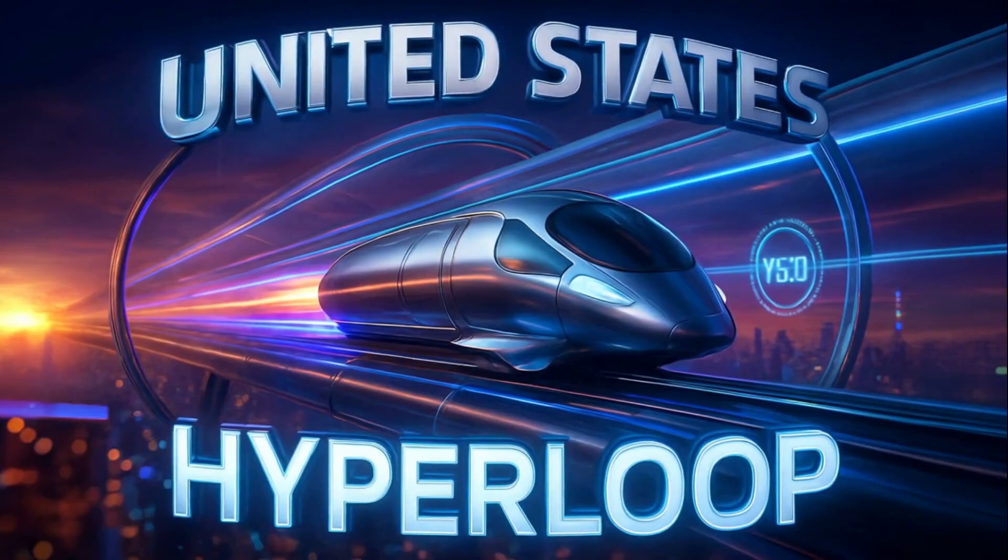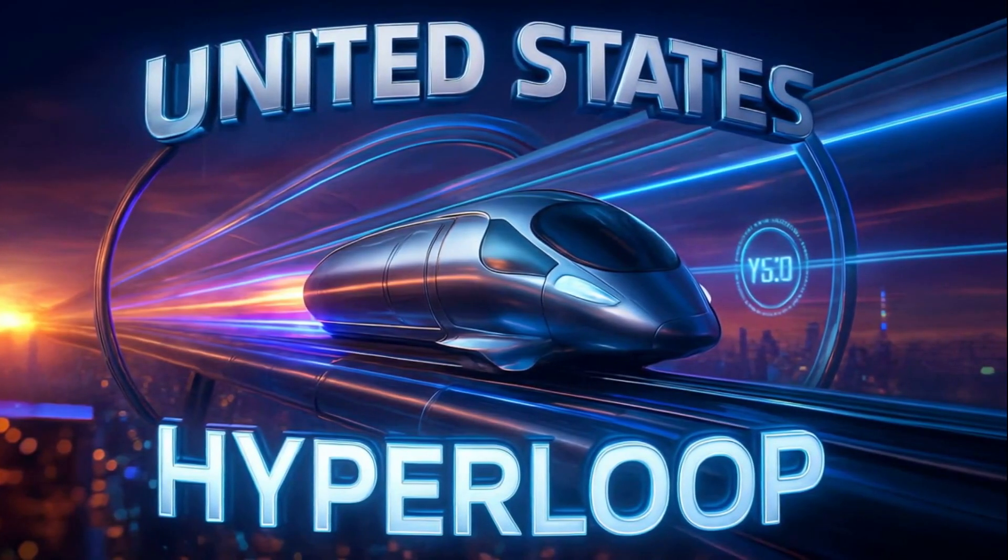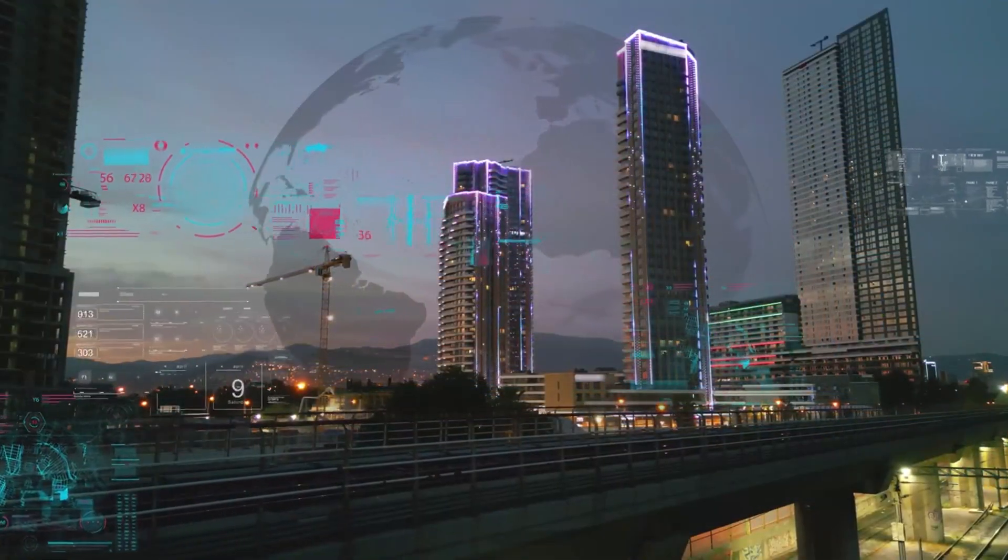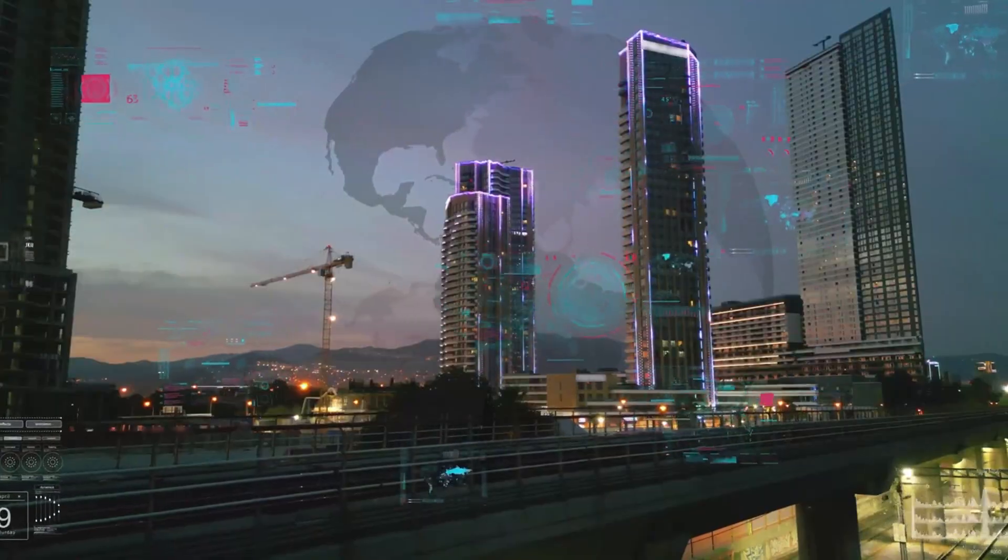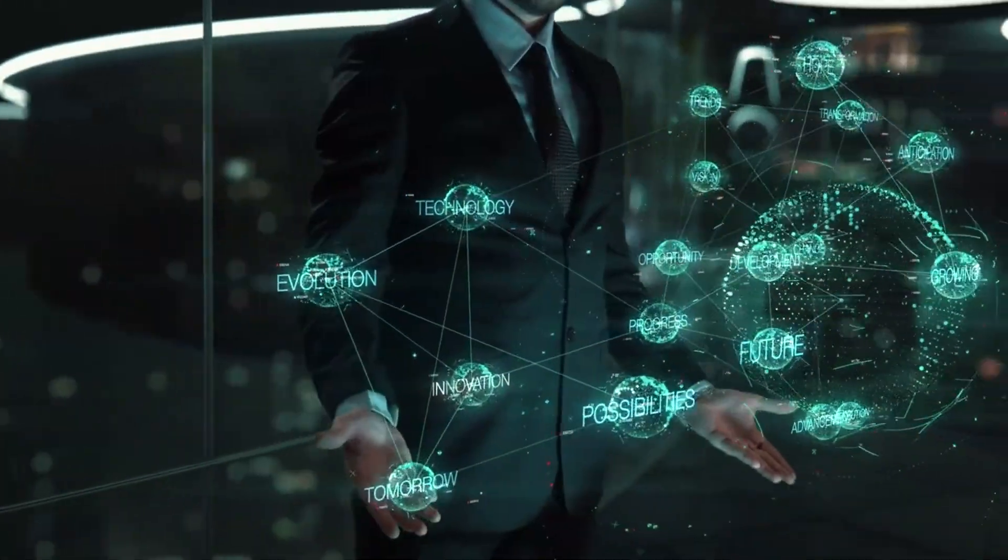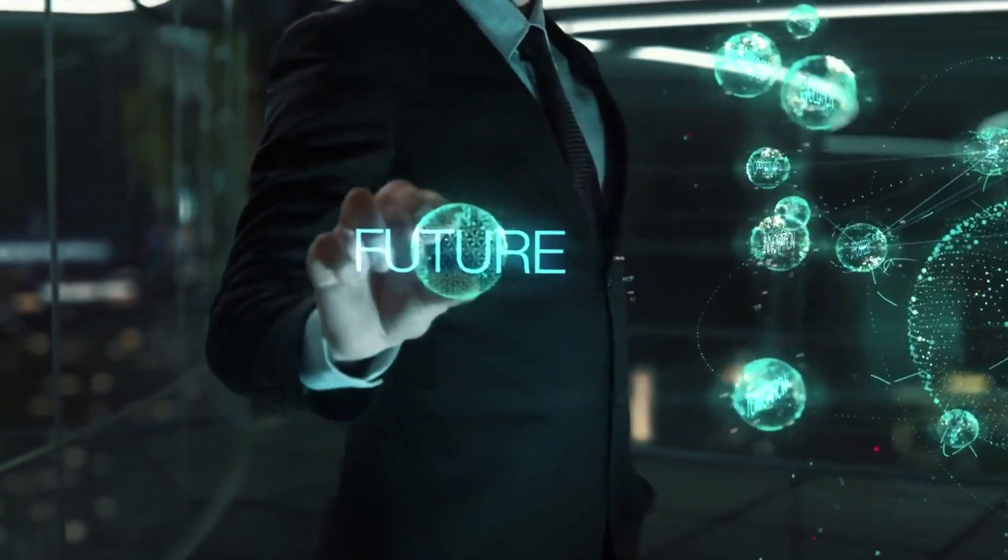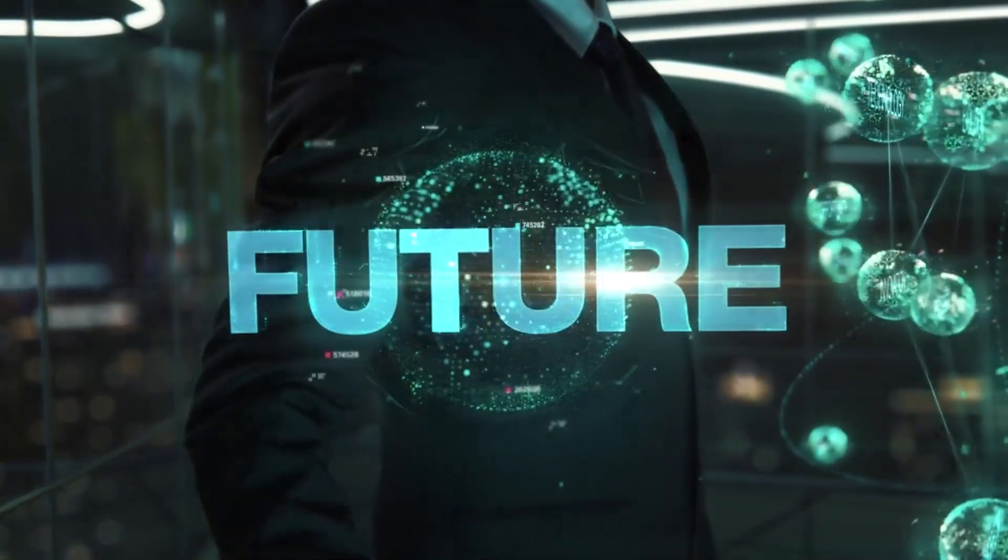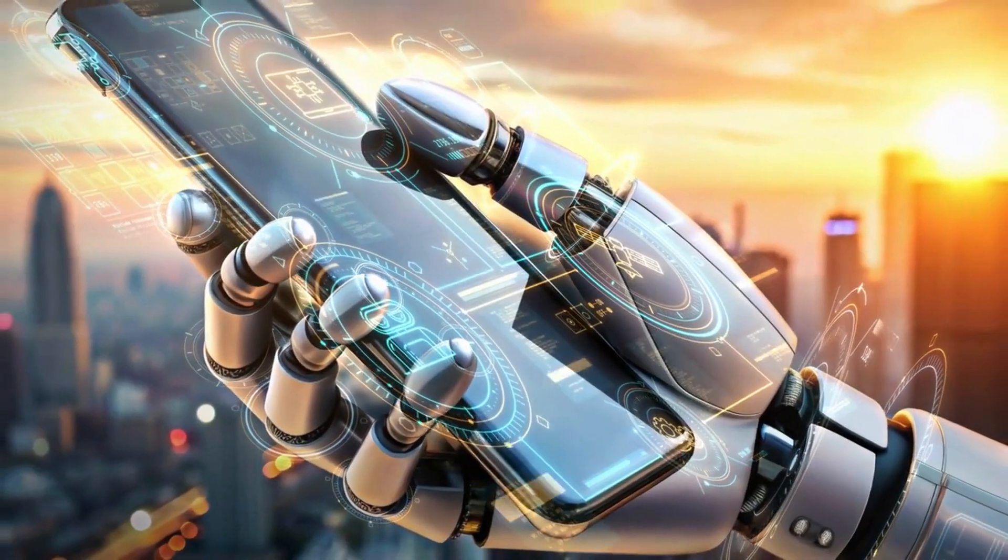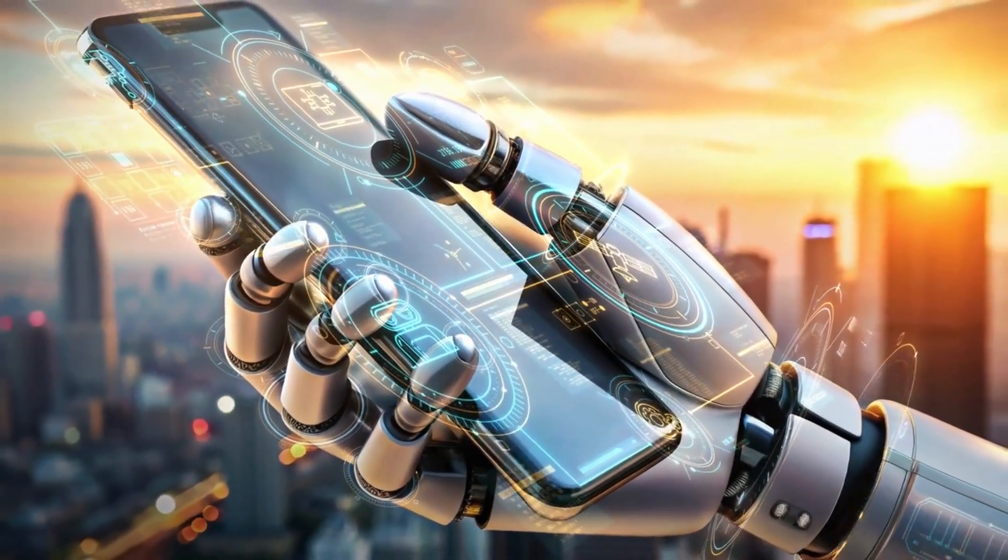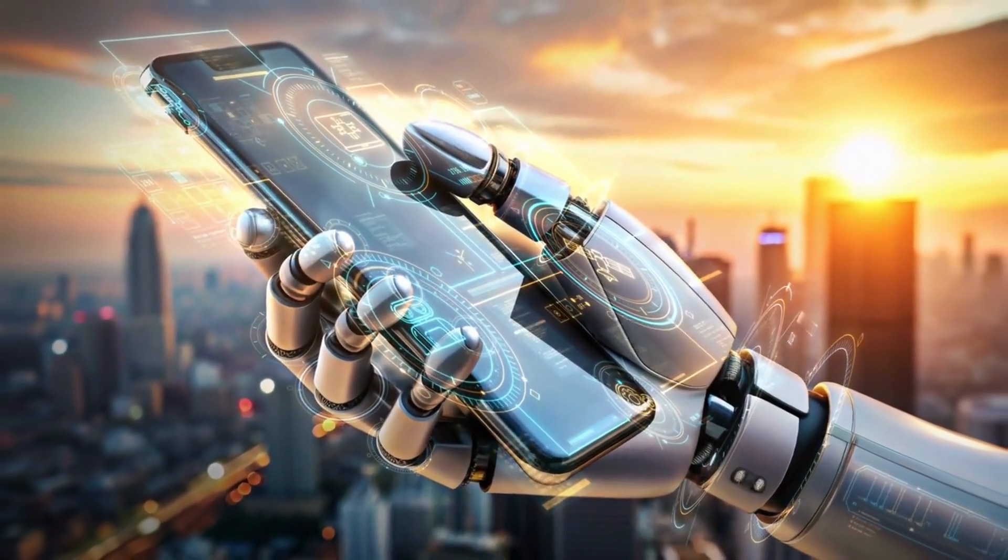The United States is betting big with Virgin Hyperloop and Elon Musk's Hyperloop vision, which heavily borrow from vacuum maglev principles and could connect cities like LA to Vegas in minutes. And then there's South Korea, pushing for domestic maglev vacuum fusion systems to future-proof their national infrastructure. This isn't just transportation, it's a technological arms race where nations are battling for global dominance in the next-generation mobility market.